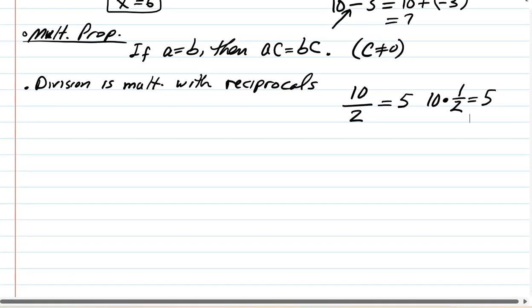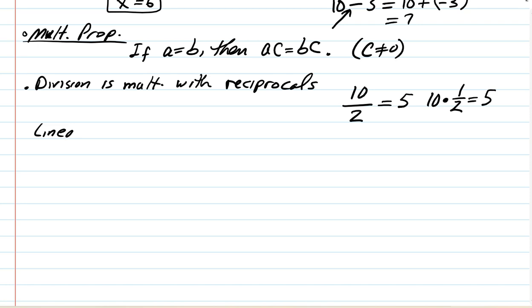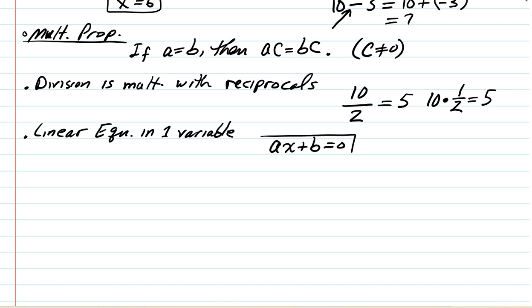Our focus in this section is linear equations in one variable. A linear equation in one variable has the form ax plus b equals 0, where a may not be zero. This is also called a first-degree equation because the greatest degree on the variable is 1.